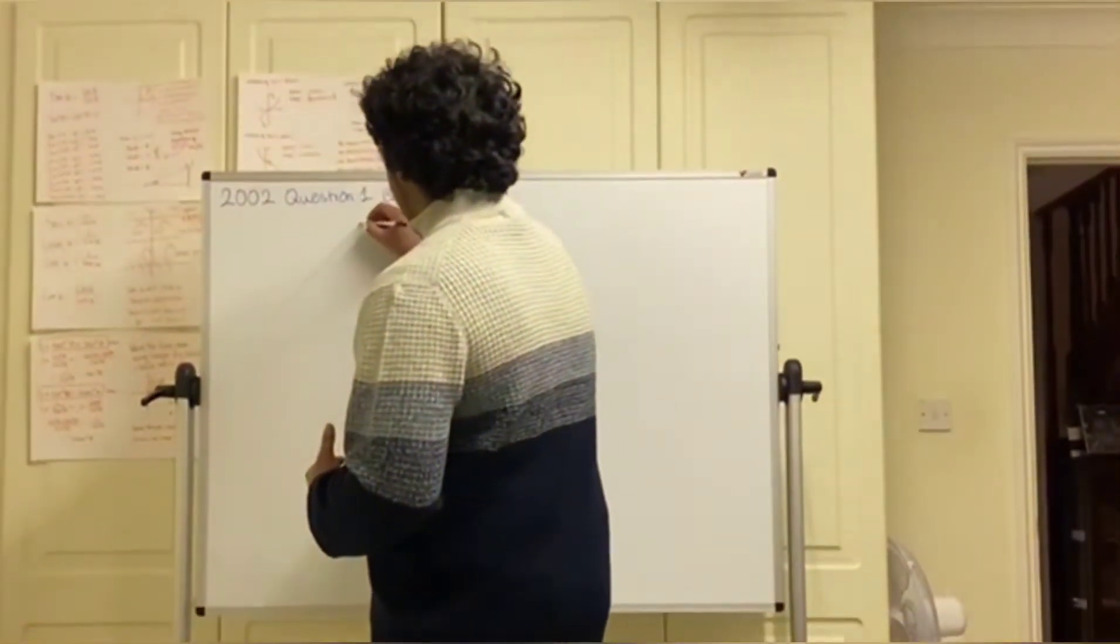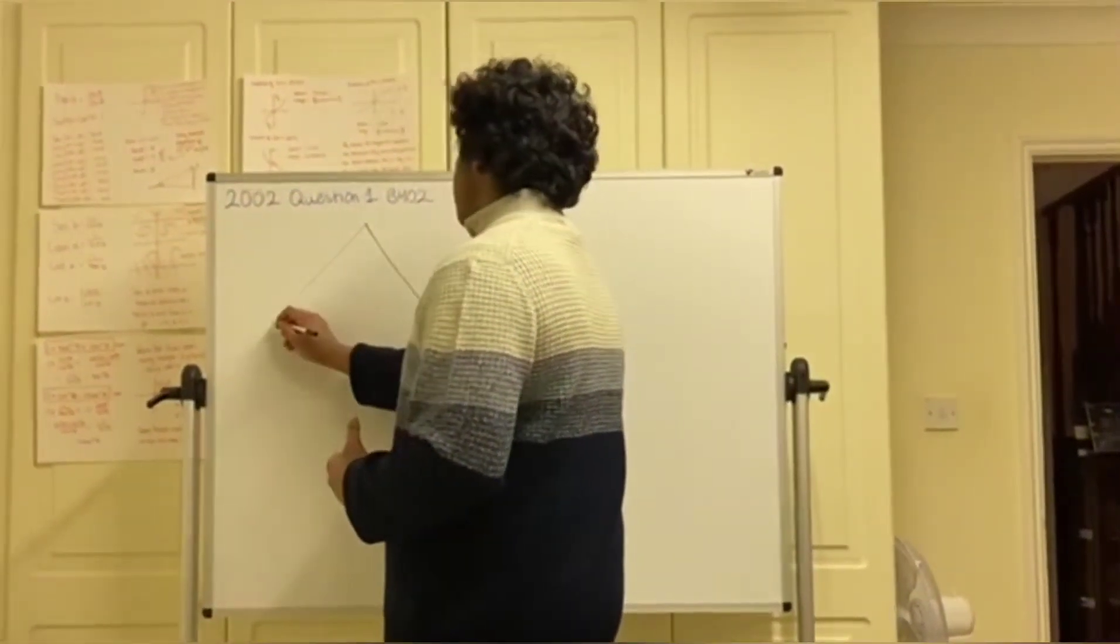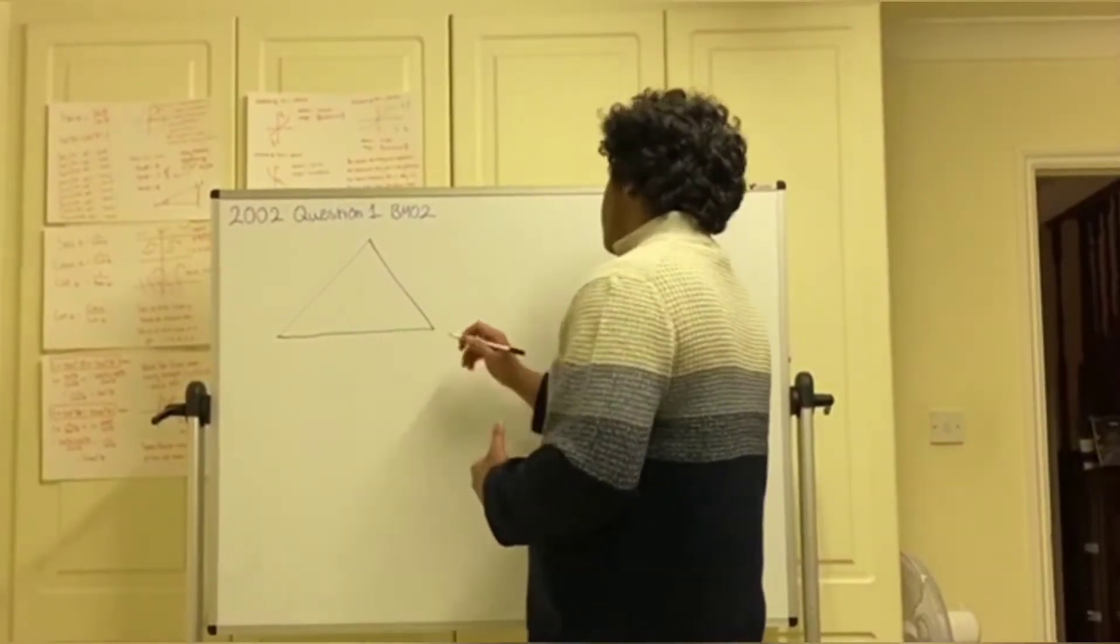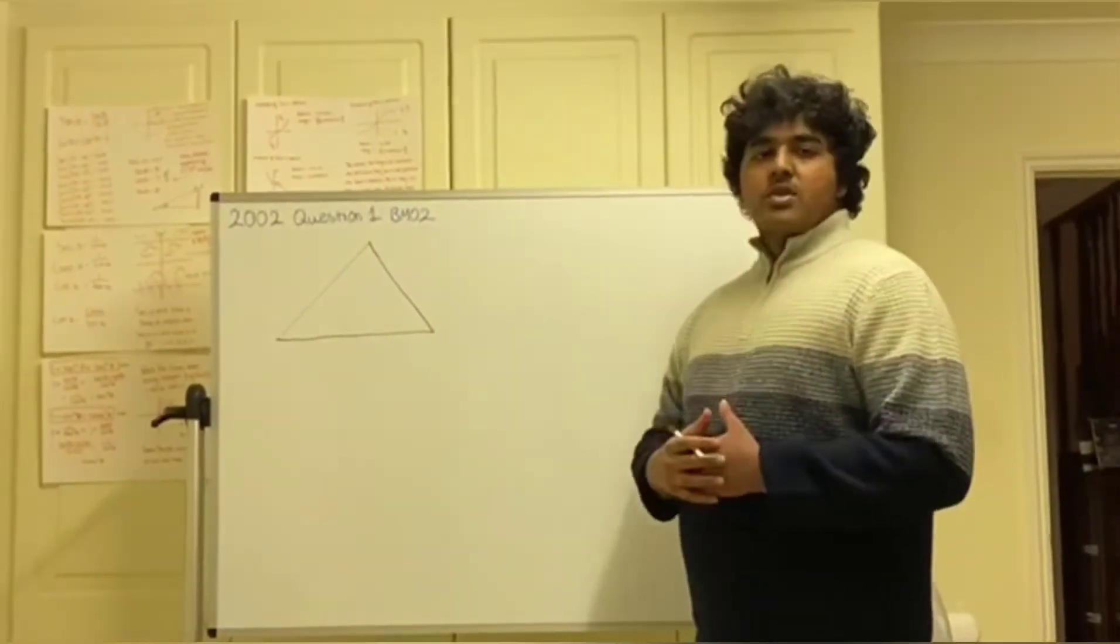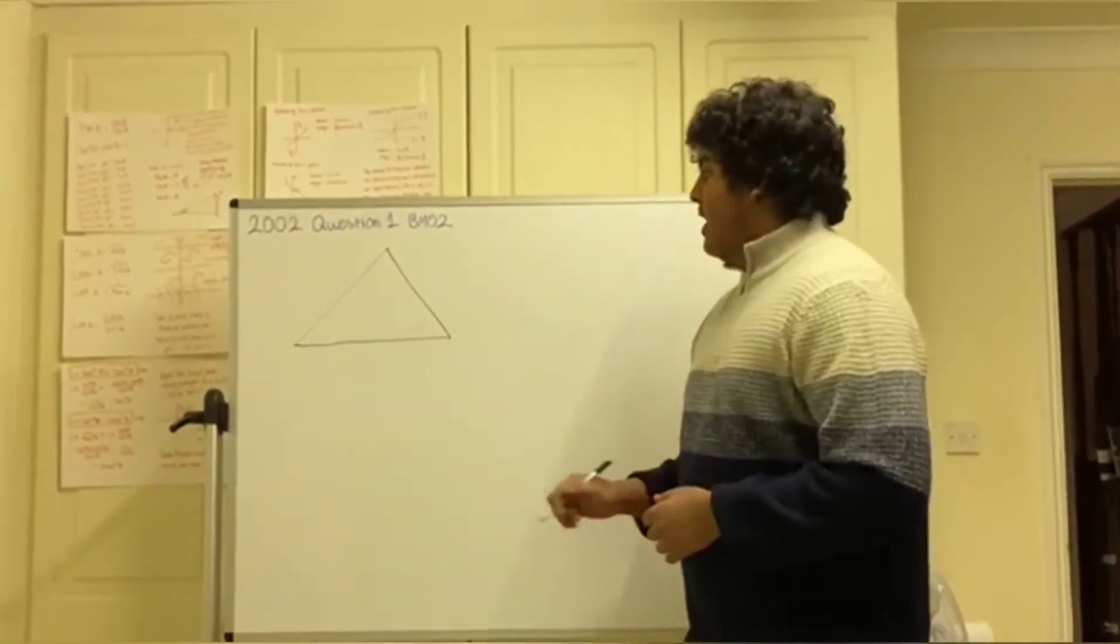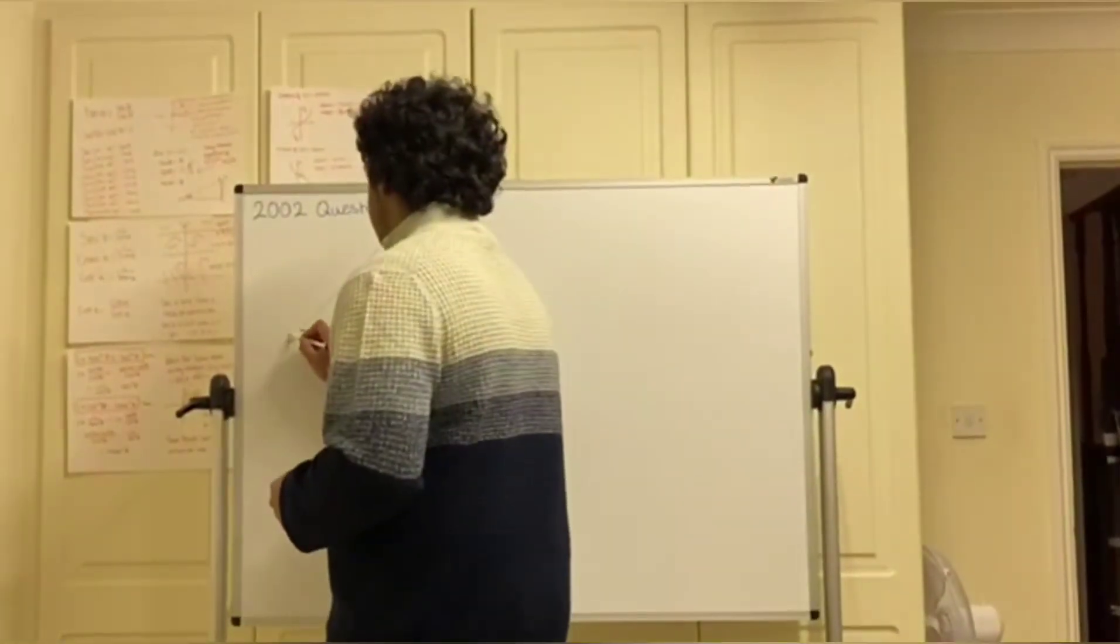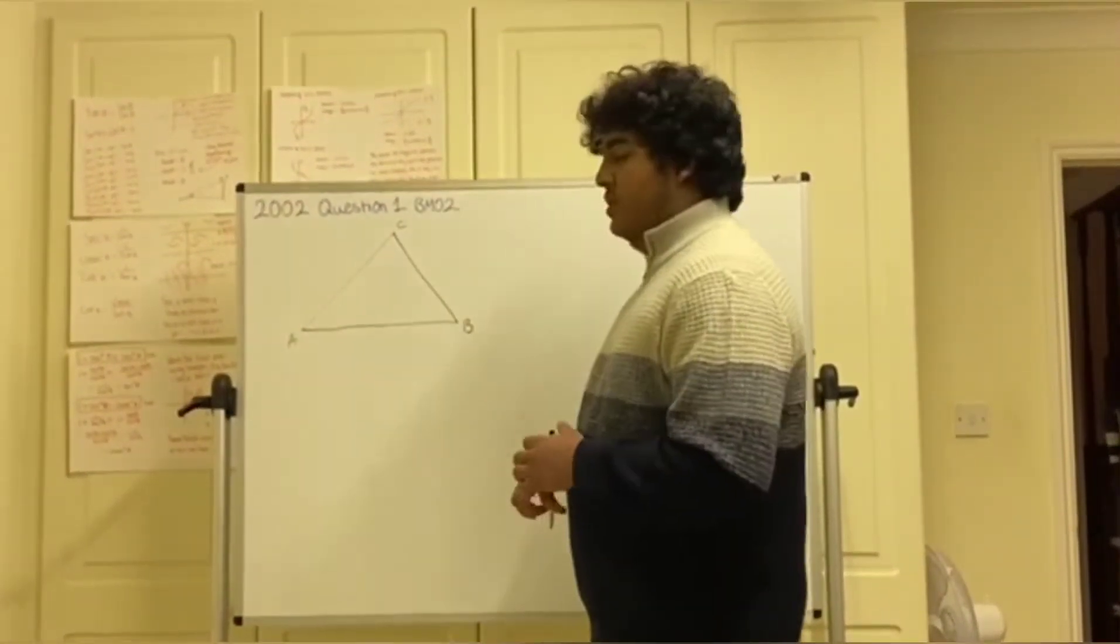The question asks for an acute angled triangle, so we'll do our best to try and draw one which has almost acute properties. Now we'll label the vertices A, B, C anticlockwise as in regular fashion.